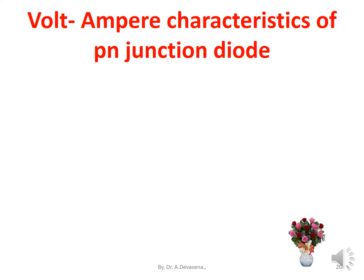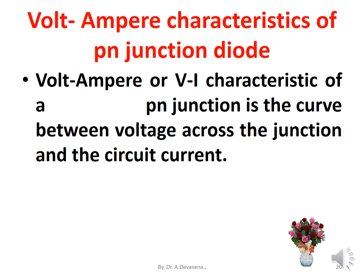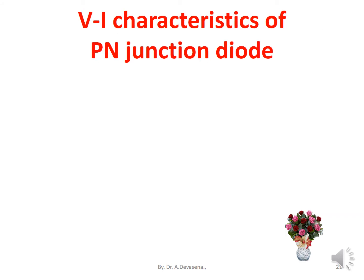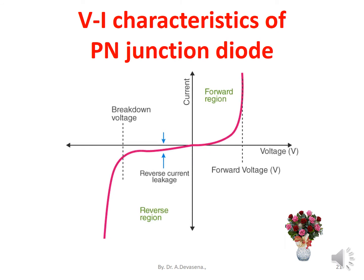Volt-ampere or V-I characteristic of a P-N junction is the curve between the voltage across the junction and the circuit current. Usually voltage is taken along the x-axis and current is taken along the y-axis. The x-axis shows voltage in volts and the y-axis shows current in amperes. The diagram includes both the forward region and the reverse region characteristics.